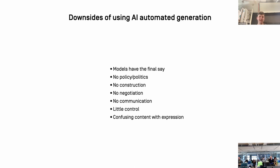The crucial problem with all this automatic generation is that the model has the final say. Among the things we're missing are policy, politics, intentionality, and directionality. The whole universe is created by those who made the model and selected the data. Architects are falling for the same trap as when CAD tools arrived: the ontology is given, and instead of you directing the model, the model programs you. AutoCAD programs you to work in an AutoCAD manner — this is how your idea of design gets affected by the ontology of the tool.